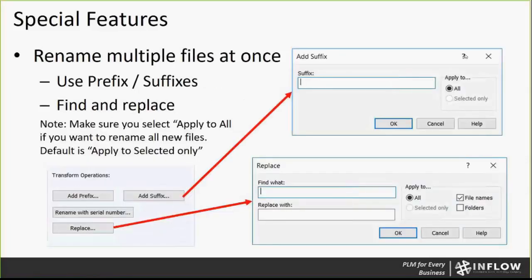An additional feature — like I was talking about with the transform options — you've got the ability to add prefixes or suffixes. These can be very useful. If you'd like to rename files with your initials, maybe you are doing concept work or you just want to test using CopyTree without adding garbage files into your vault, that's a very easy way to identify those files. Another example: if you've got a customer-specific model that you want to create based off a standard model, you can add a prefix or suffix to give it a unique name. Just realize when you are making a selection, you want to select either to apply them to all or the selected files.